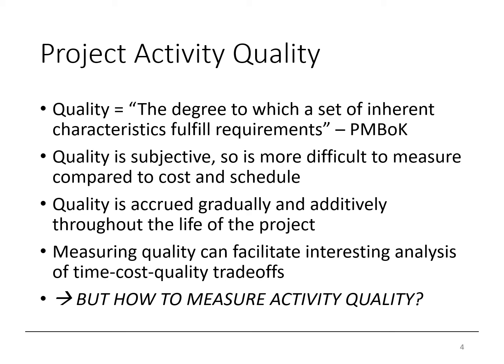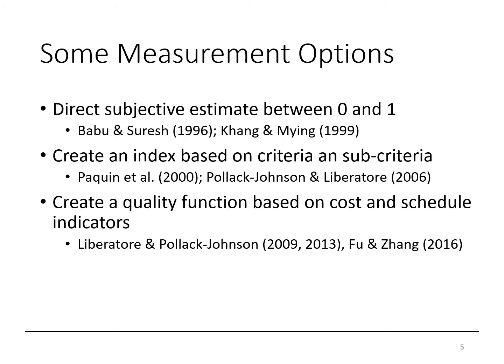But how do we measure activity quality? Various innovative ways have been proposed. The earliest attempts included subjective estimates taking a value between 0 and 1. These estimates were then used, along with cost and schedule metrics, to optimize in various linear programs.